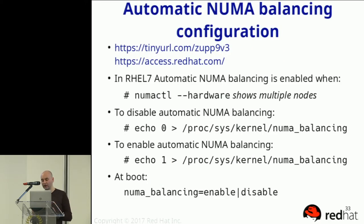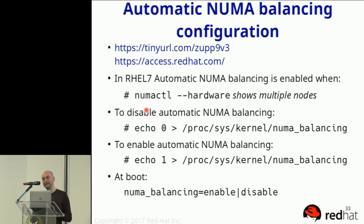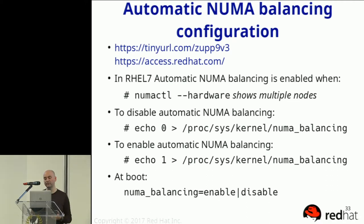NUMA locality is very important for performance — in the worst case, getting it wrong can make things massively slower than what's shown in that benchmark. You can check whether your server is NUMA with the command numactl --hardware; if it shows multiple nodes, that's NUMA hardware. You can see the effect of automatic NUMA balancing by echoing 0 and 1 into /proc/sys/kernel/numa_balancing. This feature is available since RHEL 7 and upstream, and with sys-tuning you can benchmark the effect on your current workloads.